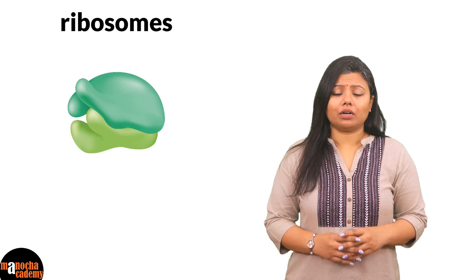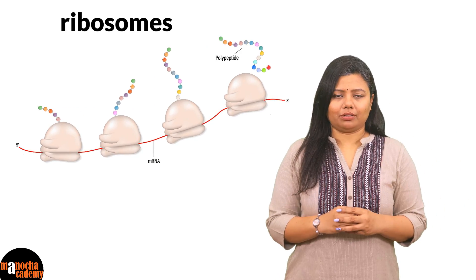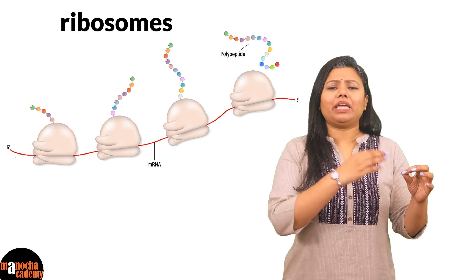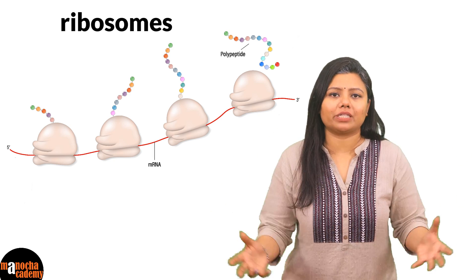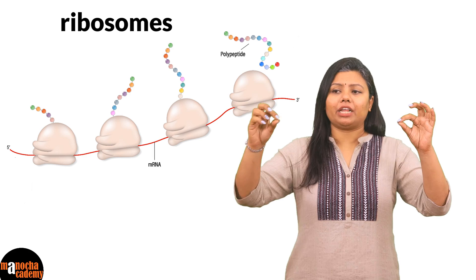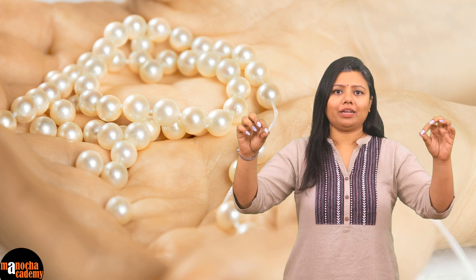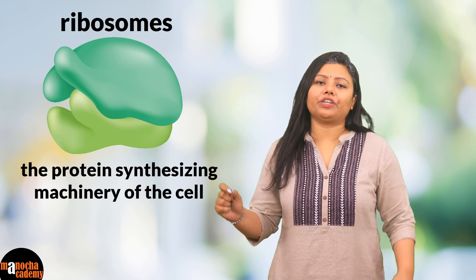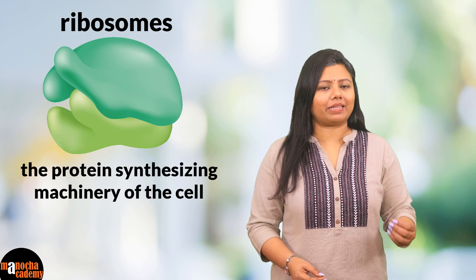Ribosomes sometimes occur singly, but they may also be found in a chain-like structure called a polysome or polyribosome. This happens when the same messenger RNA is being translated several times simultaneously by a number of ribosomes, producing large copies of the same protein. The ribosomes attached at different regions of the messenger RNA give it a beaded-string appearance. Ribosomes are regarded as the protein-synthesizing machinery of the cell, responsible for synthesizing proteins by reading the genetic code in messenger RNA.